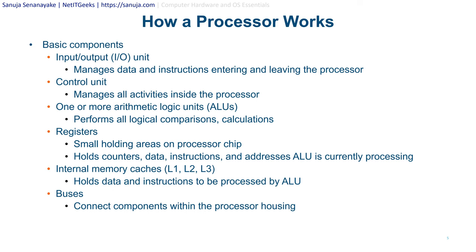Basic components of a processor include the I/O unit, which manages data and instructions entering and leaving the processor; the control unit, which manages all activities inside the processor; and one or more arithmetic logic units (ALUs) that perform all logical comparisons and calculations. ALUs are the heart of a CPU. Registers are small holding areas on the processor chip that hold counters, data, instructions, and addresses the ALU is currently processing.